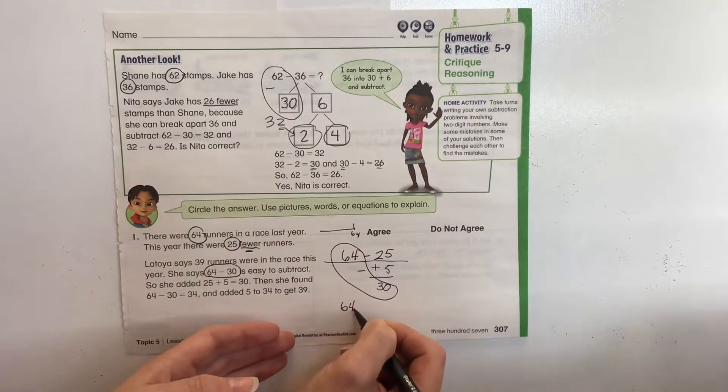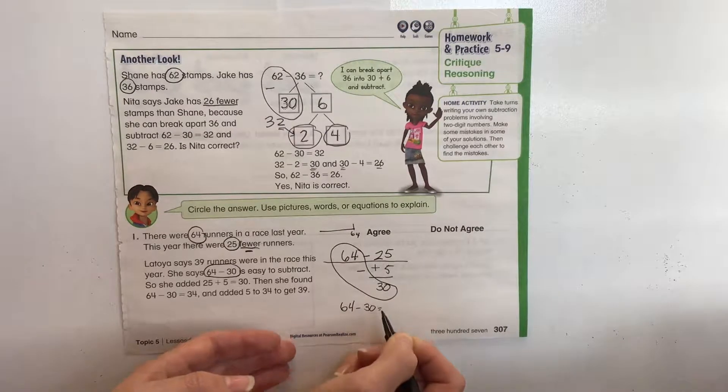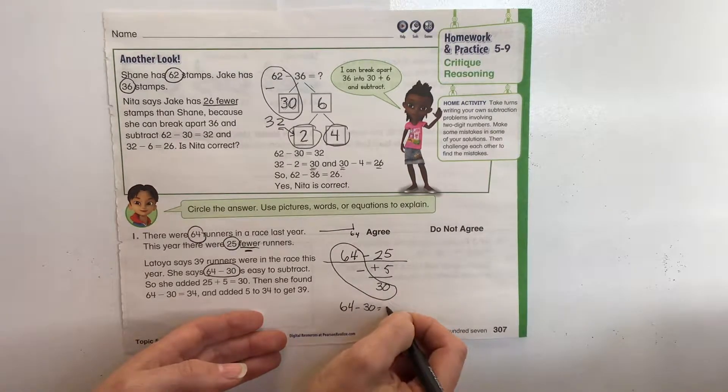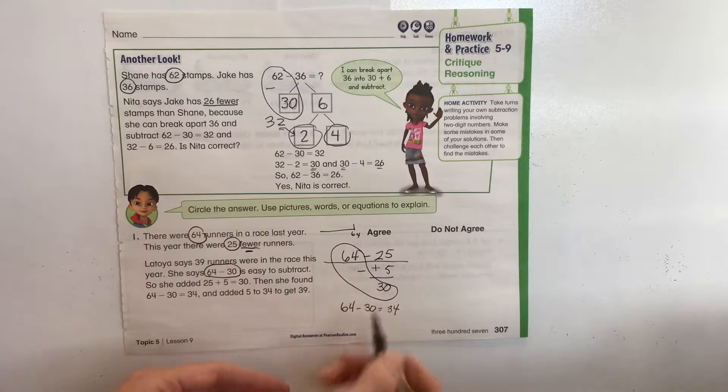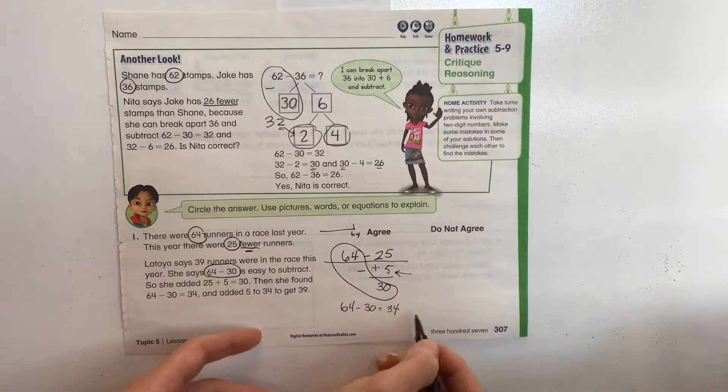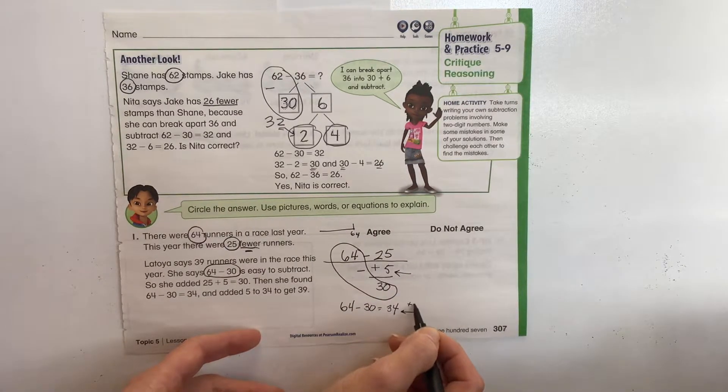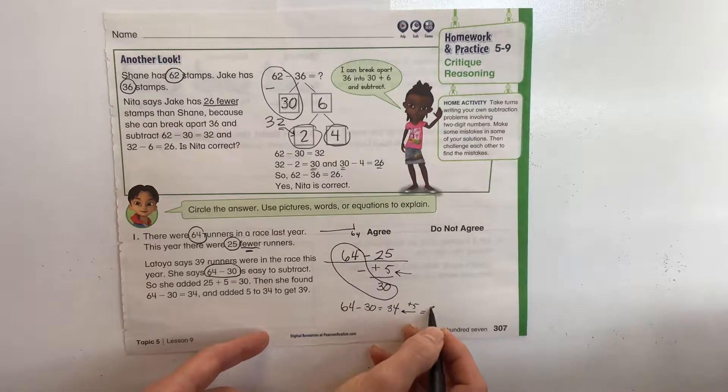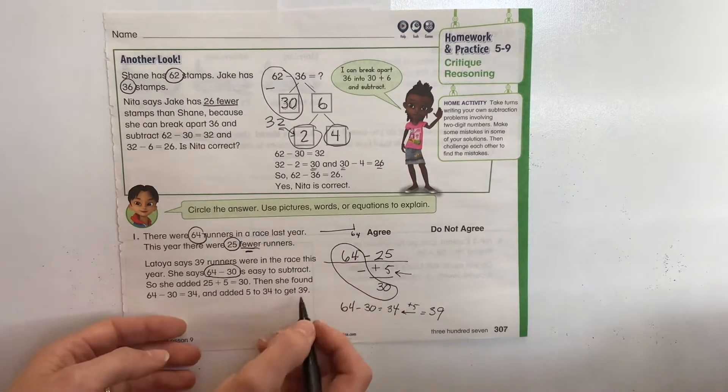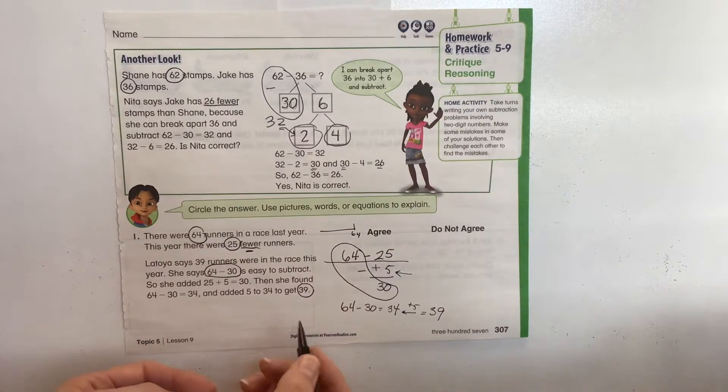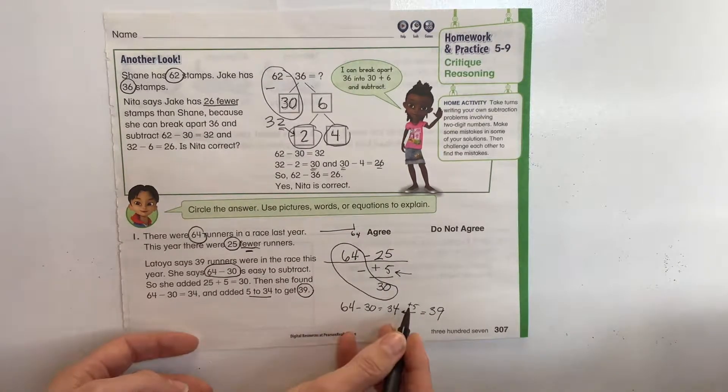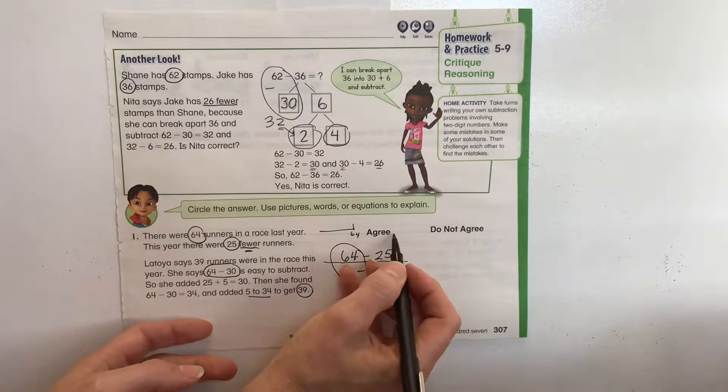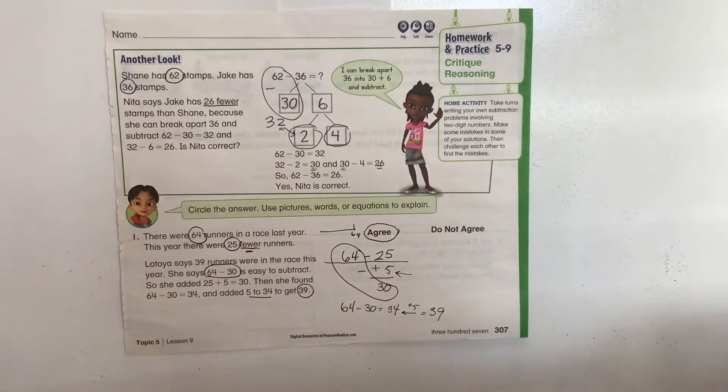So 64 minus 30 equals 34, and because we added 5 here, we also need to add 5 here. So 34 plus 5 is going to equal 39. Let's check. She said she got 39, and she added the 5 to the 34 here. We did all the same process. So we're going to circle agree, that we do agree with how she did it. We're just taking a look at their reasoning.